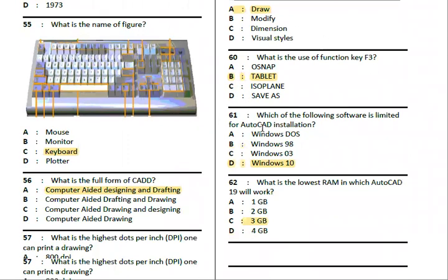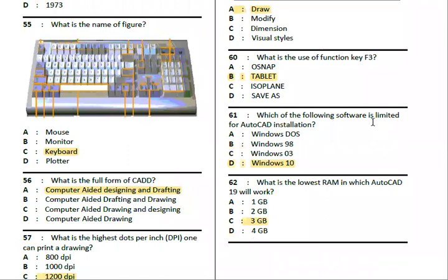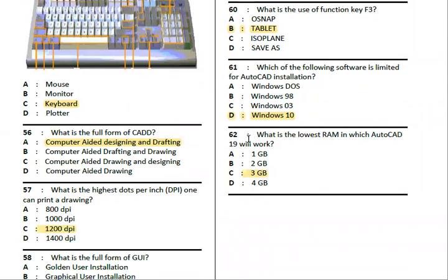Next, which software is limited for AutoCAD installation? Windows 10 is the answer. Next, what is the lowest RAM in which AutoCAD 2019 will work? The lowest RAM is 3GB.